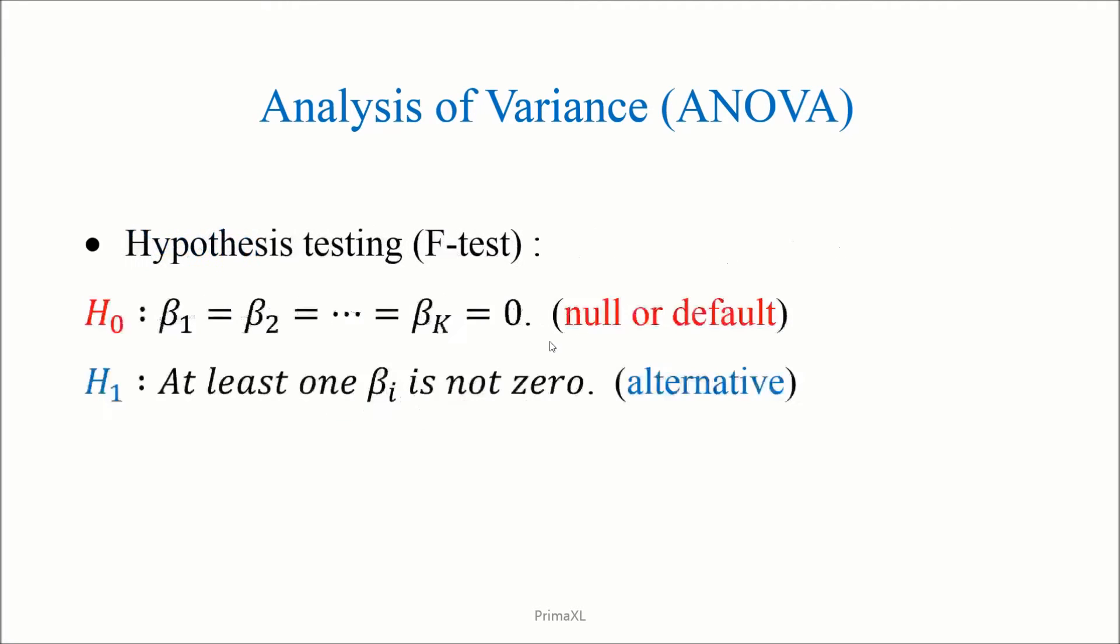In the F-test, the null hypothesis, or H0, states that all the coefficients are zero, which means that the model is no good at all. The alternative hypothesis, or H1, states that at least one of the coefficients is non-zero, which means that the model captures real pattern.